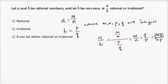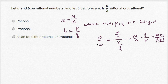Well, MQ is going to be an integer — the product of two integers is going to be an integer. And NP is going to be another integer for the same reason. So I've just shown that A over B can be expressed as the ratio of two integers. I've just proven it — A over B is for sure going to be rational.